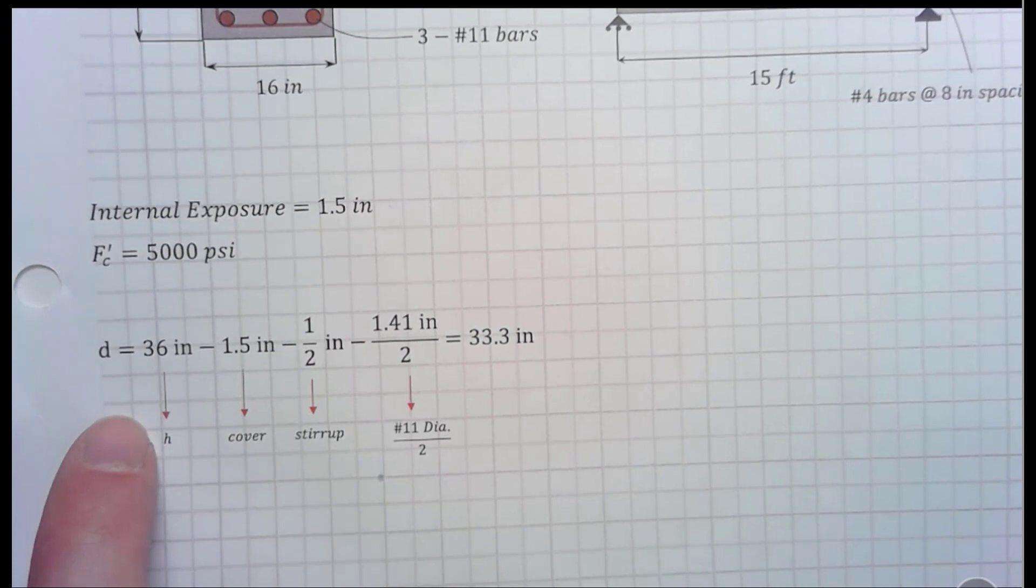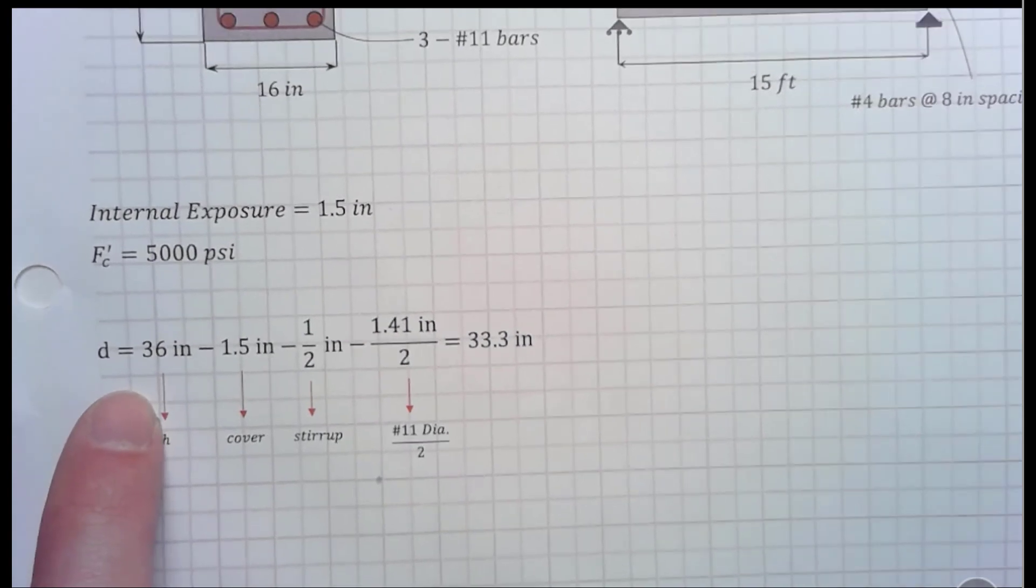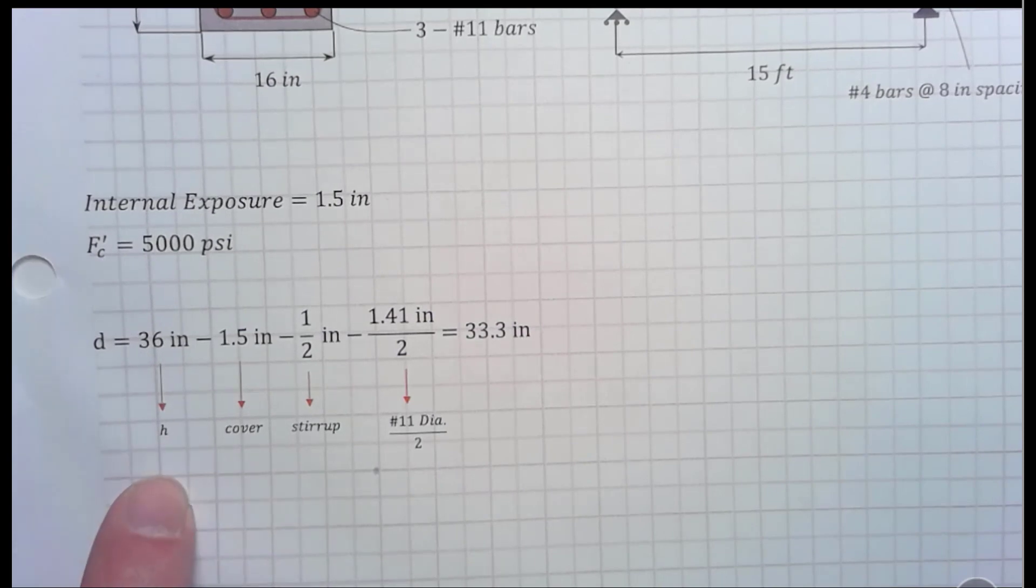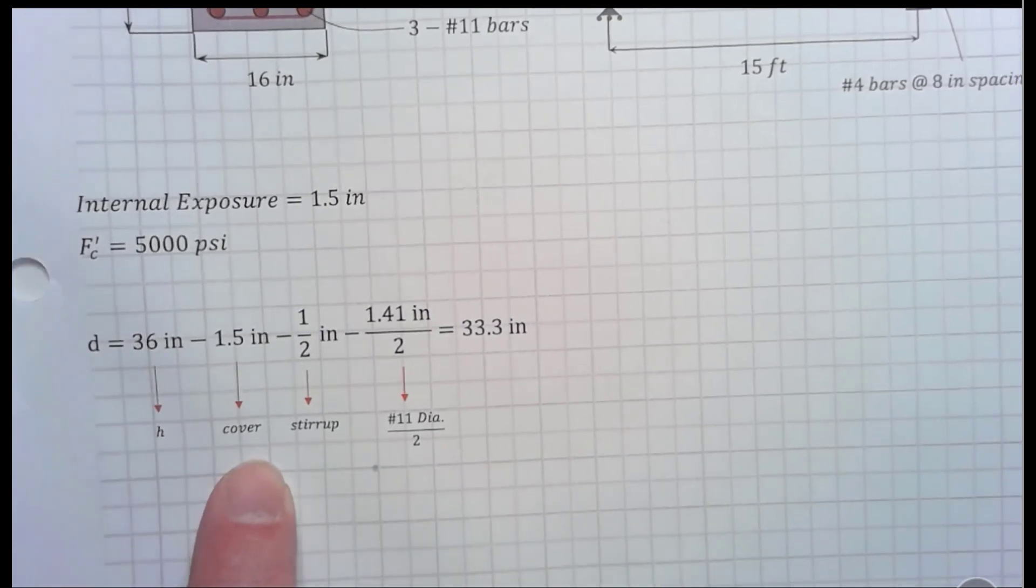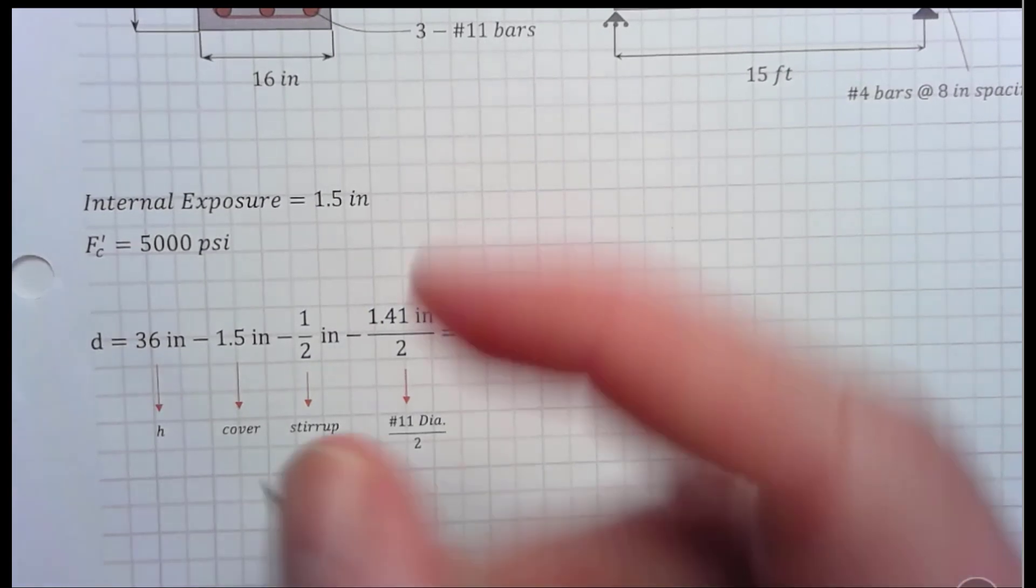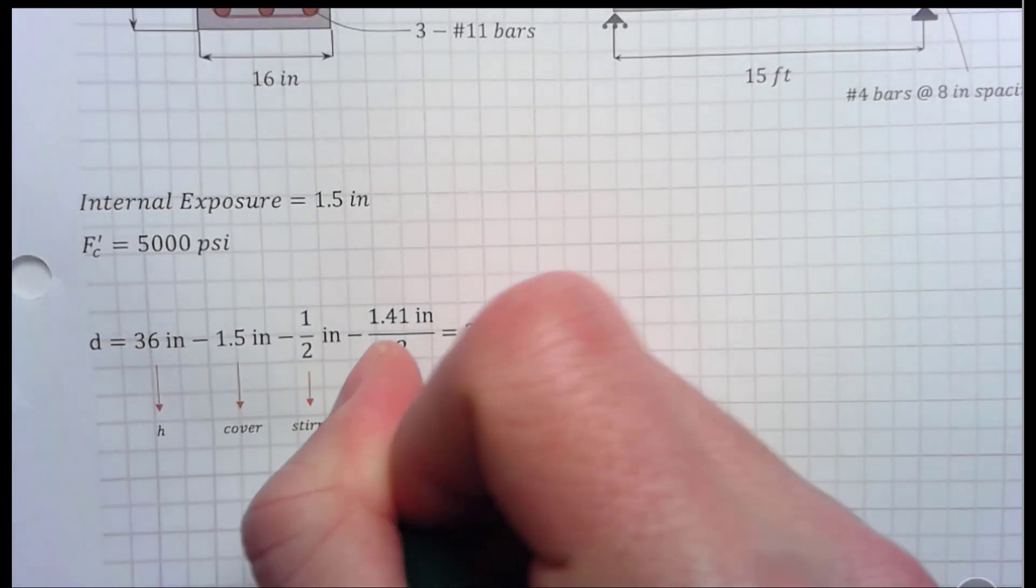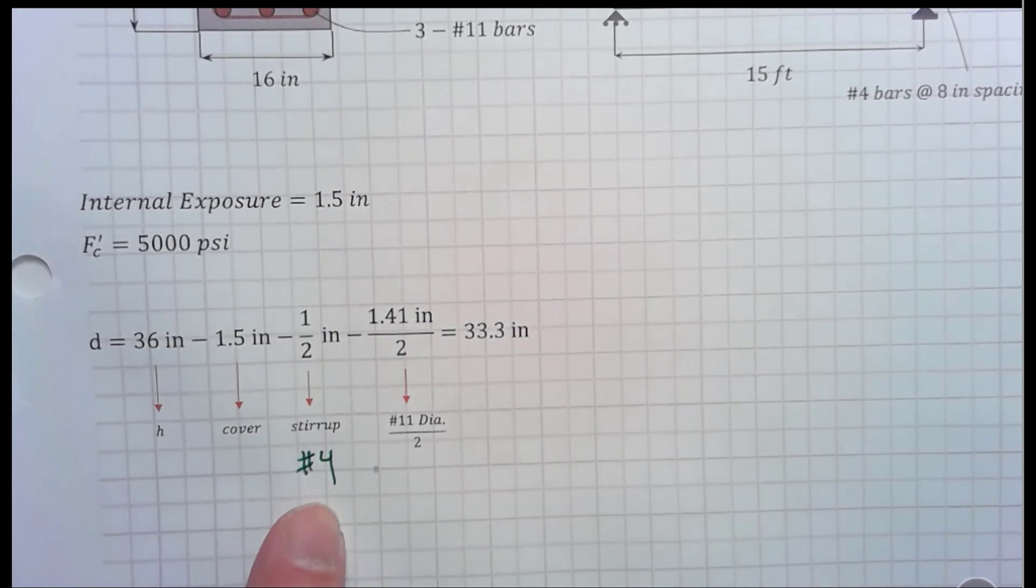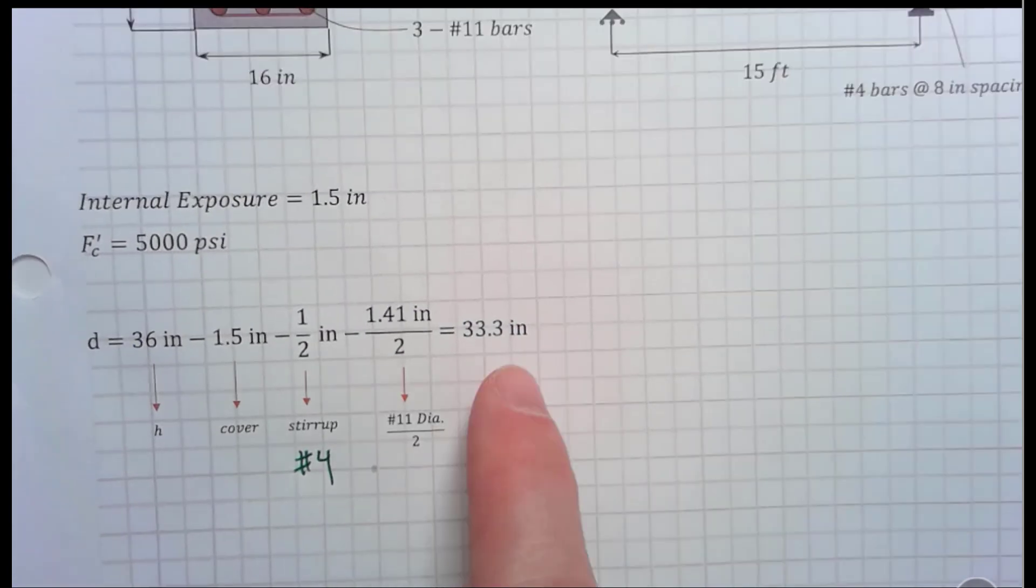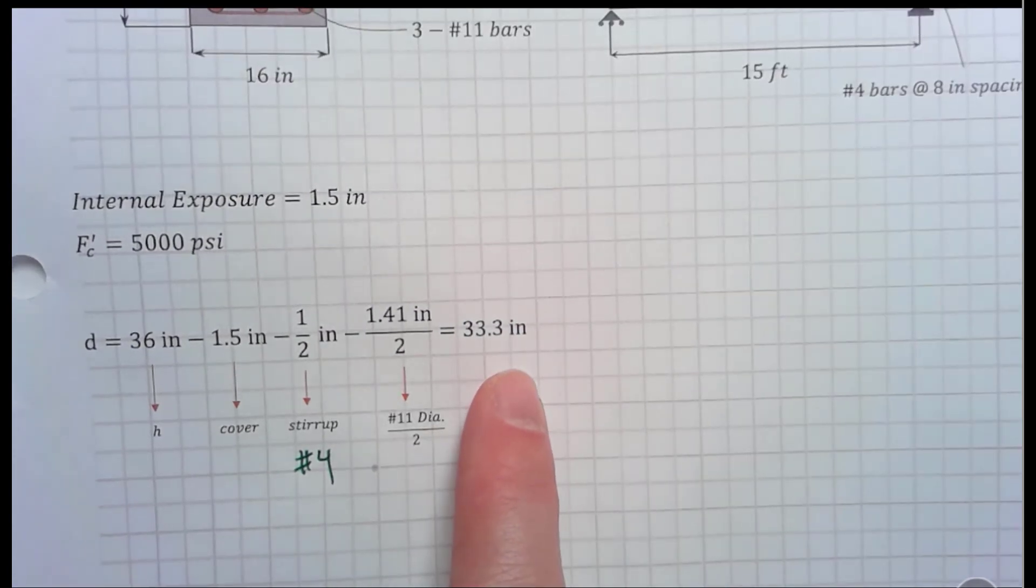Now, we first have to find the d. This is the distance from the compression fiber to the centroid of the tension steel. This is the height of the member, which is 36 inches, minus the cover, which is 1.5 inches, minus the size of the stirrup. That's a No. 4 bar, and the diameter of a No. 4 bar is 0.5 inch, and then it's 1.5 the diameter of the longitudinal bar, or a No. 11 bar in this problem. So, if you calculate this whole thing, it's 33.3 inches.